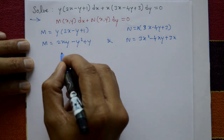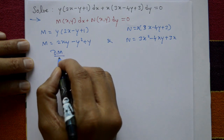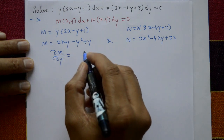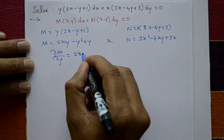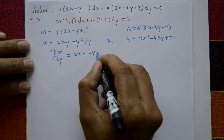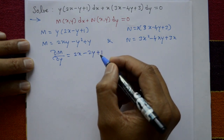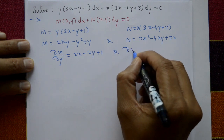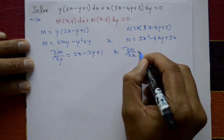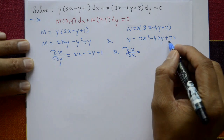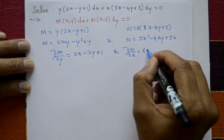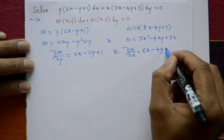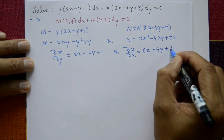Differentiate M with respect to y partially, treating x as constant: ∂M/∂y = 2x - 2y + 1. Differentiate N with respect to x partially, treating y as constant: ∂N/∂x = 6x - 4y + 3.